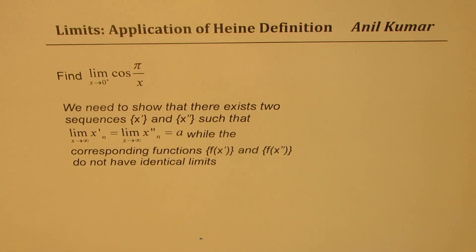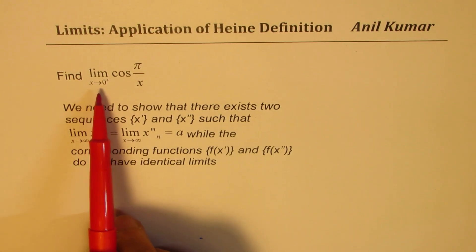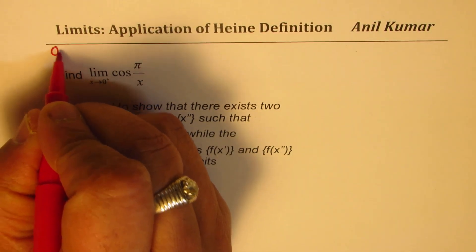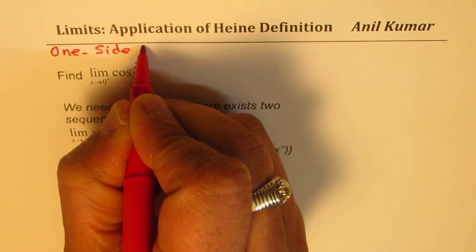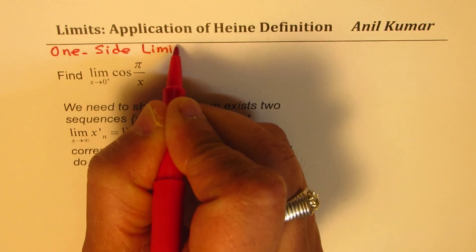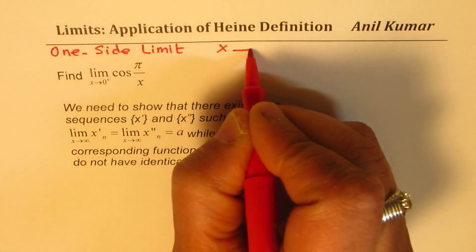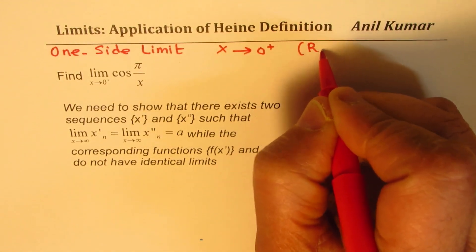I'm Anil Kumar sharing with you a very important concept based on Heine's definition. Find the limit, one-side limit, as x approaches 0 from the right side for cos π by x. So we are trying to find one-side limit here from the right side.